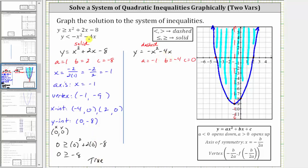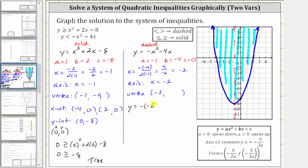Now we move to the second parabola and inequality. The axis of symmetry is x equals negative b divided by two a, which gives us negative negative four divided by two times negative one — that is positive four divided by negative two — equal to negative two. So the axis of symmetry is x equals negative two and the x-coordinate of the vertex is negative two. Substituting into the function: y equals the opposite of the square of negative two minus four times negative two, giving negative four plus eight, which is positive four. The vertex is negative two comma four.